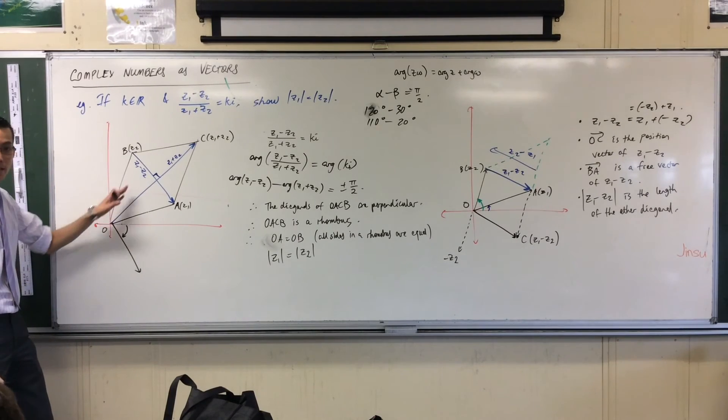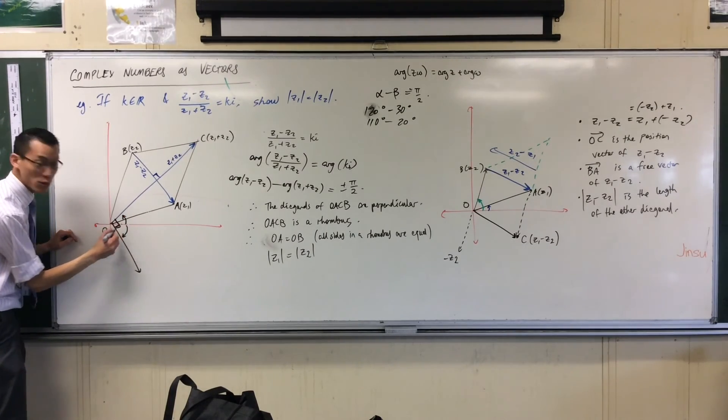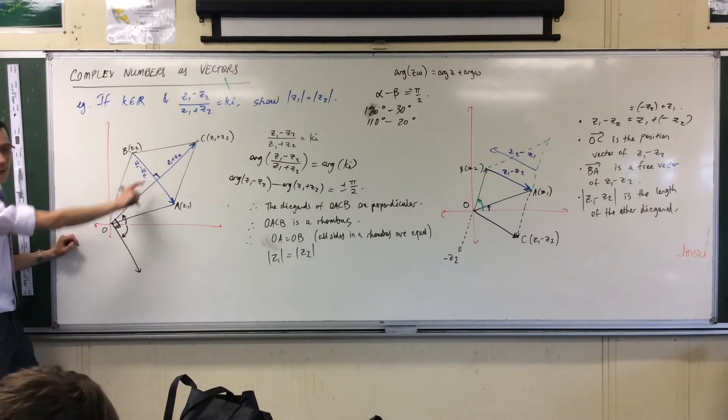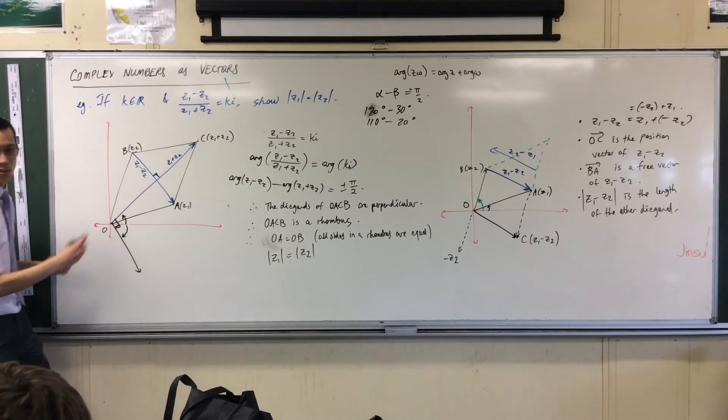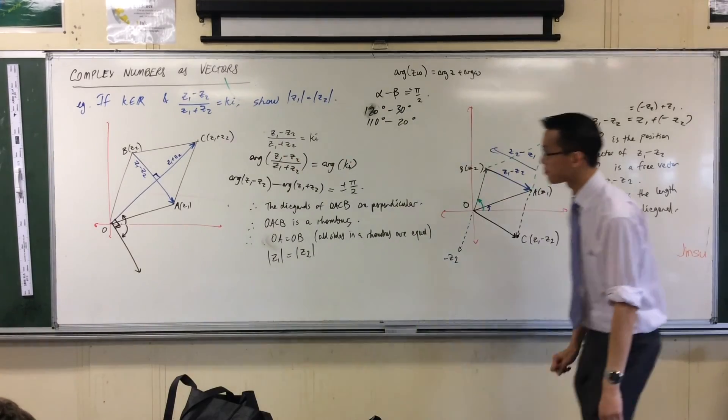Now where is Z1 plus Z2? Well I already have its argument, it's here. But if these guys are at right angles to each other, then those two are at right angles to each other because look, I have alternate angles. Do you see that? No worries, great question.